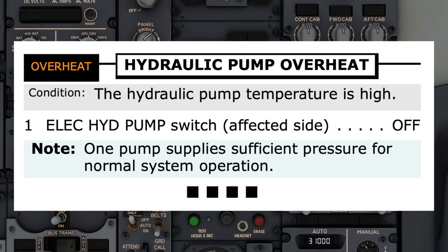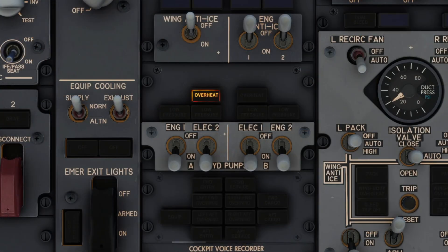Hydraulic pump overheat checklist. Condition: the hydraulic pump temperature is high. Do you agree? I agree. Both pilots agree this is the correct checklist, so the pilot monitoring moves to step 1. Electric hydraulic pump switch, on the affected side, to off. It's off.